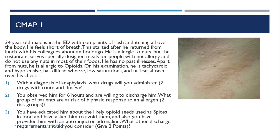You have educated him about likely opioid seeds used as spices in food, asked him to avoid them, and provided him with an auto-injector adrenaline. What other discharge requirements should you consider? People got into the trap saying he needs to go home with an adult — but he himself is an adult, observed for six hours, and given nothing that would cause sedation, so that doesn't make sense.